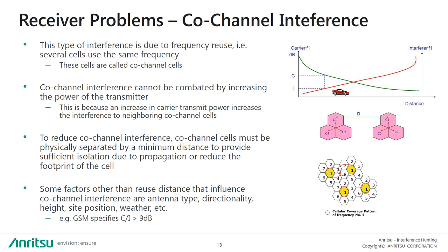Co-channel interference comes down to network planning, or cell planning. Frequencies are reused so that several cells use the same frequency, and the trick is not to have those cells interfering with one another. The problem cannot be solved by increasing the power of one cell, since that will increase the interference on other neighboring co-channel cells. Usually this is managed by physically separating co-channel cells by a minimum distance to provide sufficient isolation, or by reducing the footprint of the cell — for example, by reducing its power output or angling the antennas differently.